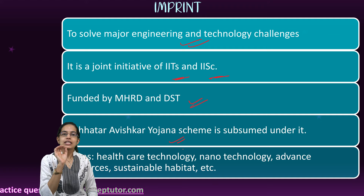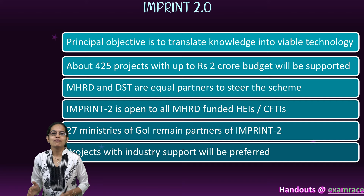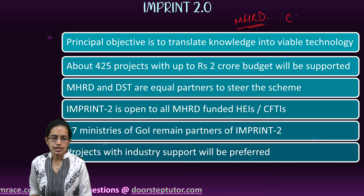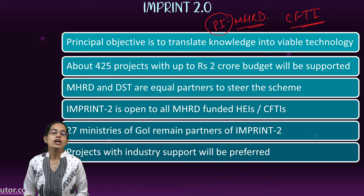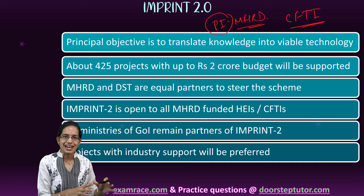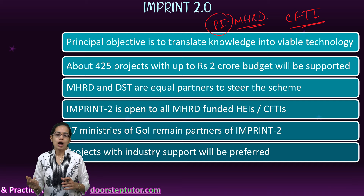There were 10 thrust areas promoted under the original scheme. Now under IMPRINT 2.0, any faculty member who is part of an MHRD-funded institute or a centrally funded technical institution can apply as a Principal Investigator. They can also have a Co-Principal Investigator from any ministry, institution, PSU, or strategic agency.